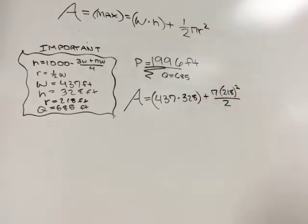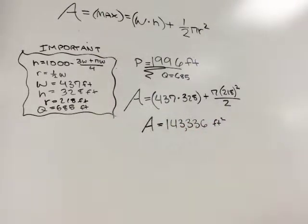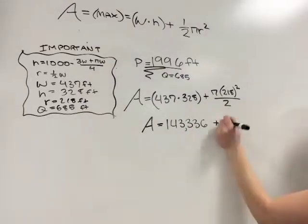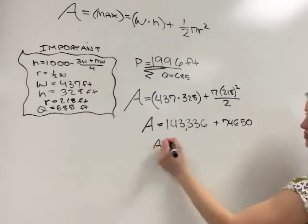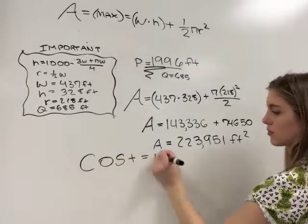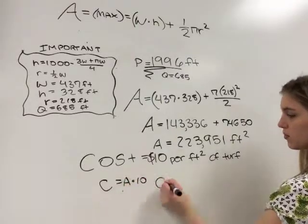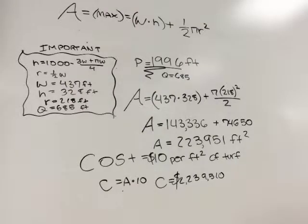Now that we have all of our dimensions, we are ready to find area. We need to find them separately, the semicircle and the rectangle. The rectangle will be 437 times 328, and the semicircle will be π times 218 squared over 2. The rectangle will equal 143,336 and the semicircle will equal 74,650. Add these together to get the total area of 223,951 square feet.